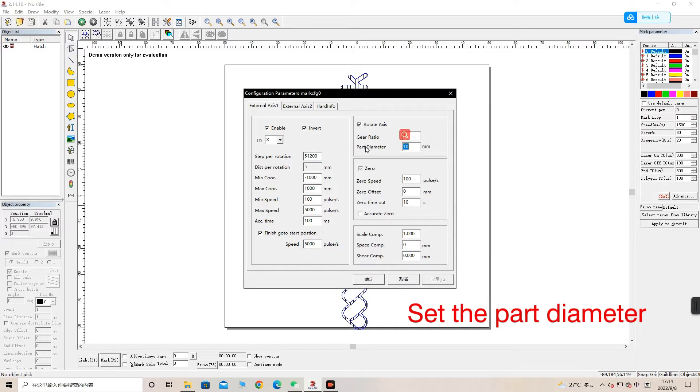Enter the part diameter of the cylinder object we want to engrave. For more parameter settings, you can contact our technician. Press this button to confirm, and then we are all set.